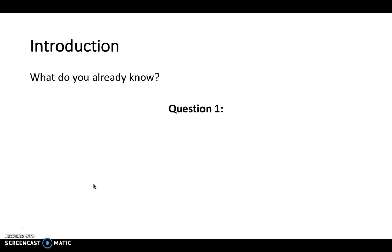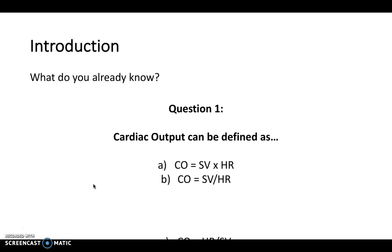Question one: cardiac output can be defined as — is it A, B, C, or D? At this stage I'd recommend pausing the video to allow yourself some thinking time, because I'm going to go through these quite quickly so we can keep the videos as short as possible.